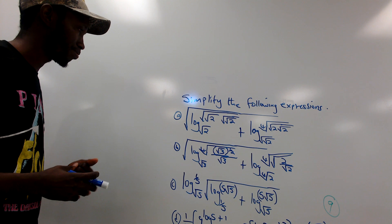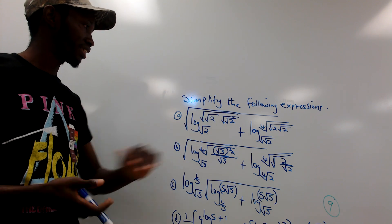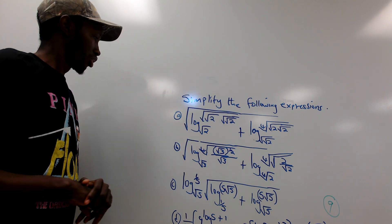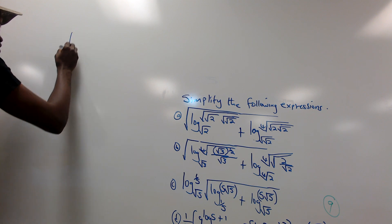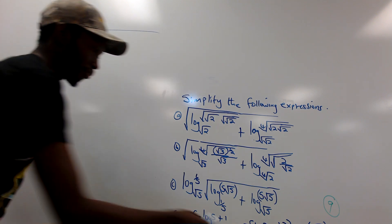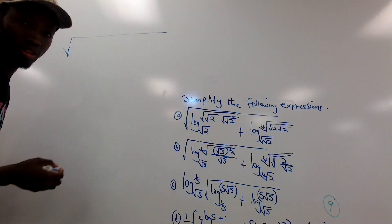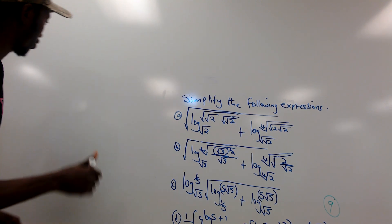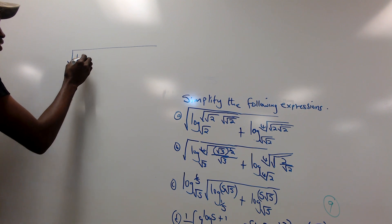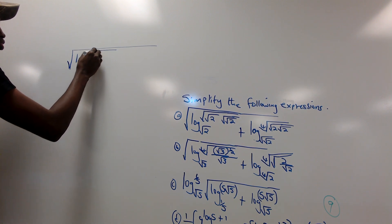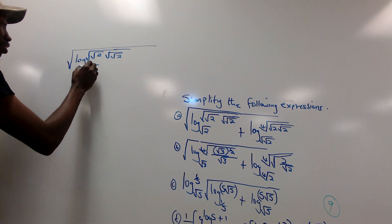For this first problem, we have two terms inside the square root that we need to simplify. Let me write it out: the square root of log of the square root of root 2, multiplied by another square root of root 2, and the base of the log is root 2.